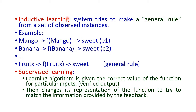We will see an example. First I will take mango as input and apply it to the function — the output will be 'sweet.' This is example one. Next, with the same function, the new input is banana — the output will be 'sweet.' The third example is apple — applying apple to the same function, the output will be 'sweet.'